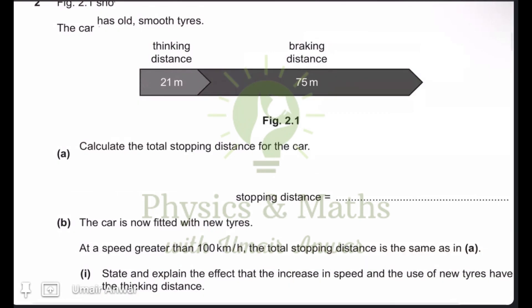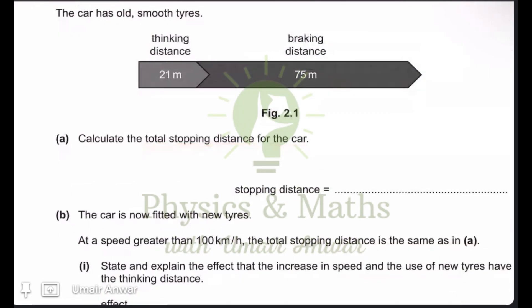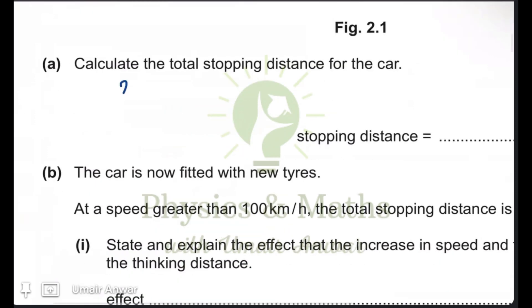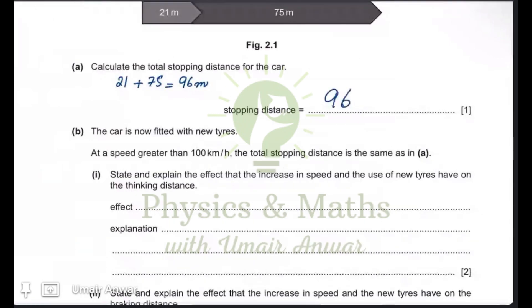Calculate the total stopping distance for the car. Stopping distance is the sum of these two distances, the thinking distance and the braking distance. When we add these two distances, this becomes the total stopping distance for any moving object. So we would be adding 21 and 75 and it gives us the value of 96 meters. So the stopping distance for this moving object is 96 meters here.